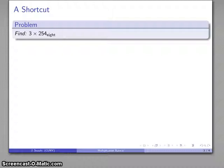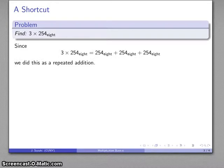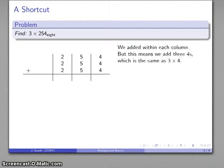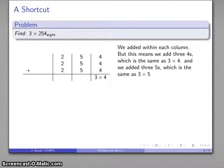There's a slight shortcut we can make that will become important in developing our standard algorithm for multiplication. It's based on our definition of multiplication. We did this as a repeated addition. What we had to do is add 4 and 4 and 4 to get 12, 5 and 5 and 5 to get 15, 2 and 2 and 2 to get 6. Wait, that's just a repeated addition. What's our notation for repeated addition? Repeated addition is a multiplication.